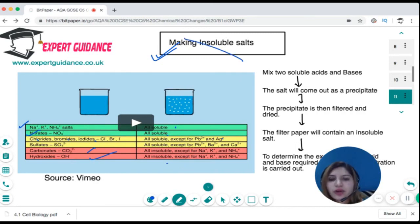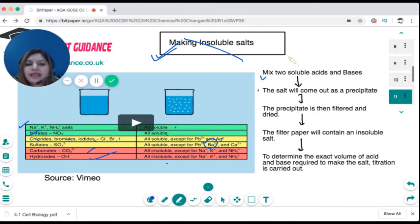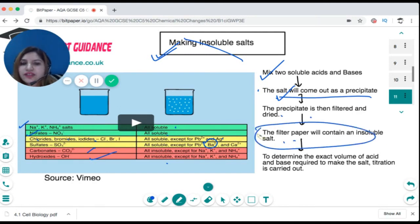So if you need to make an insoluble salt, you can see that the barium sulfate is insoluble, so you can basically take barium hydroxide and sulfuric acid and form barium sulfate. So you mix two soluble acids and bases, the salt will come out as a precipitate as it is insoluble. You filter the solution, the salt will stick to the filter paper and you can dry the filter paper and get the salt. So this is the way how you make the insoluble salt.